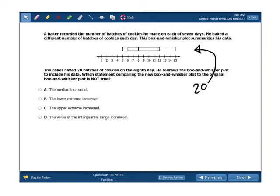Now we don't know the rest of the data set, we just know what's in the box-and-whisker plot. He redraws the box-and-whisker plot to include his data. Which statement comparing the new box-and-whisker plot to the original box-and-whisker plot is not true? Okay, so seven days worth of information. So there was definitely one day where he made 8, or there are two days where he made 8 and they were the two middle ones.